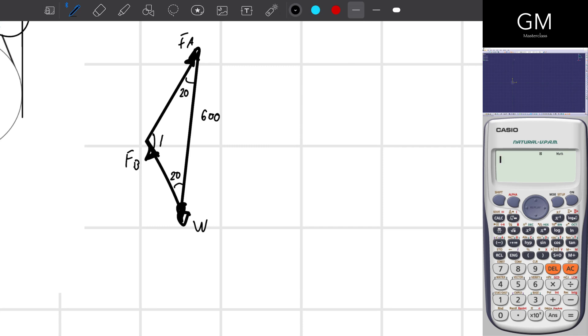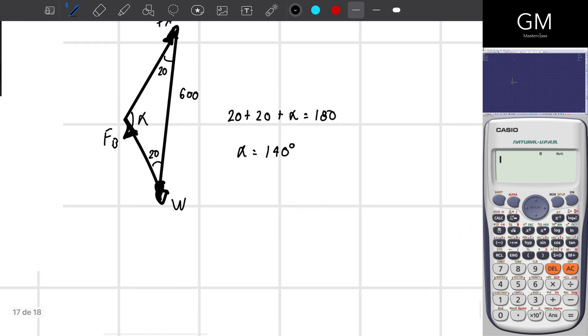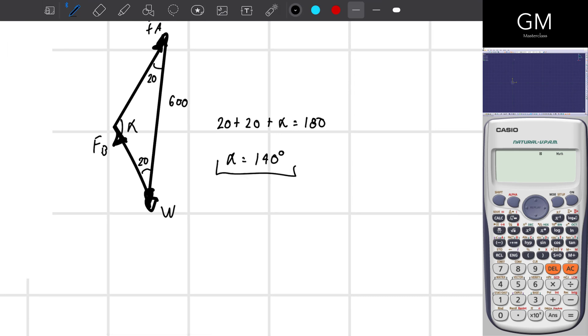I want to find this angle. I'm going to call it alpha, for example. And there is one statement that allows me to create an equation and find alpha easily. That statement is that the sum of the angles within a triangle is going to be equal to 180 degrees. That means that alpha is equal to 180 degrees minus 20 minus 20, so alpha equals 140 degrees.